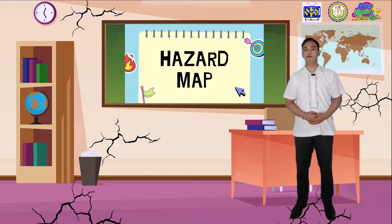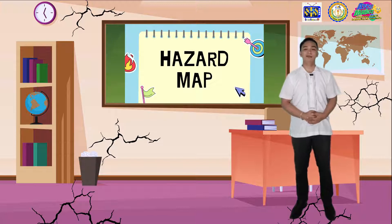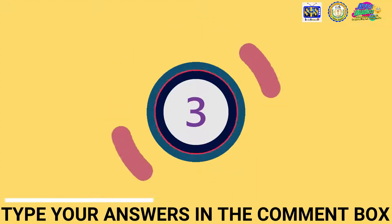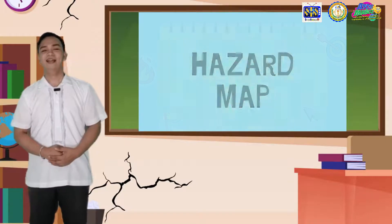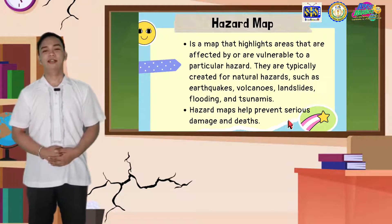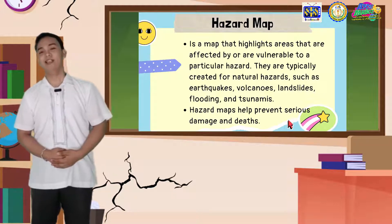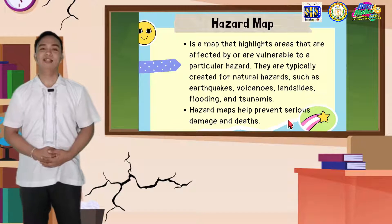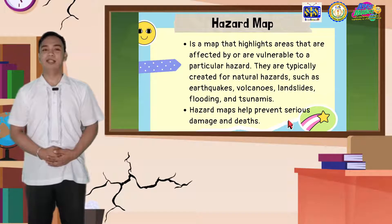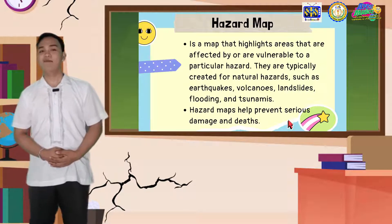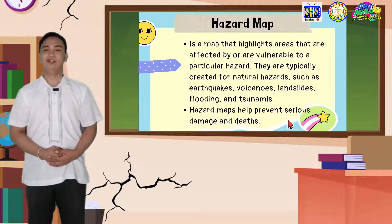I will be giving you 5 seconds to type your ideas in the comment box below. I will be monitoring the premiere of this video and those of you who will be participating actively will be given additional points in your assessment papers. A hazard map is a map that highlights areas that are affected by or are vulnerable to a particular hazard. They are typically created for natural hazards such as earthquakes, volcanoes, landslides, floods, and tsunamis. Hazard maps help prevent serious damage and deaths. On your first activity, we talked about the different parts of a hazard map. Let us now discuss and define all of them.